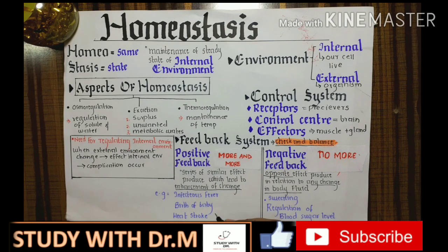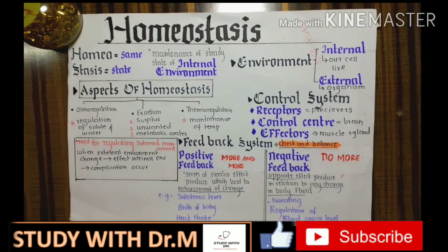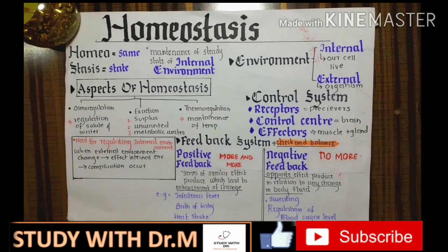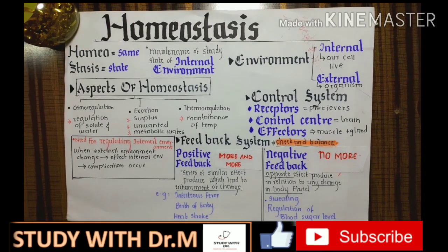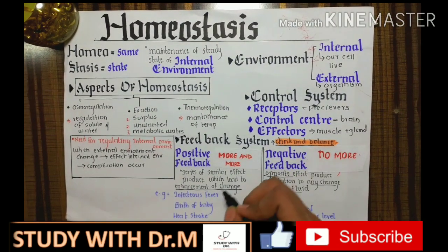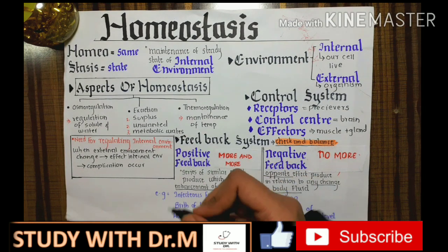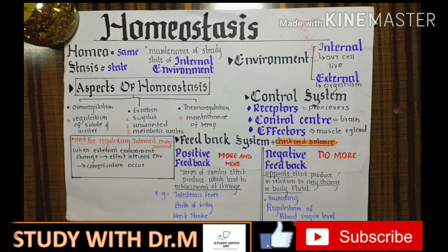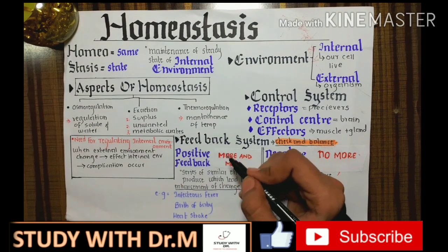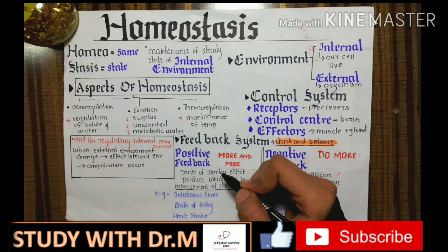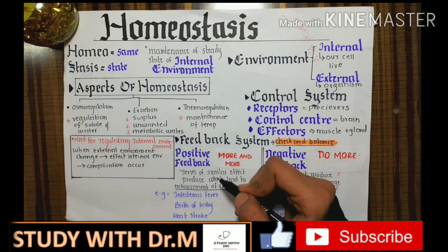The second example is the birth of a baby. When the head of the fetus comes down in the uterus, the uterus starts contracting more and more. The more the head comes down, the more the contractions increase — this is enhancement and promotion of change, a classic example of positive feedback.